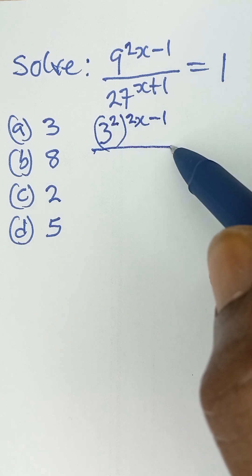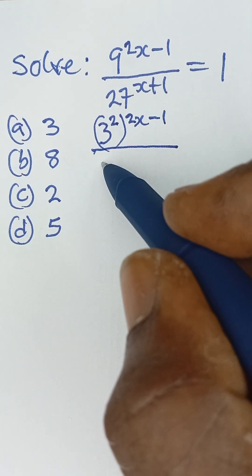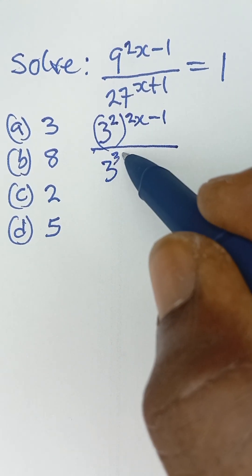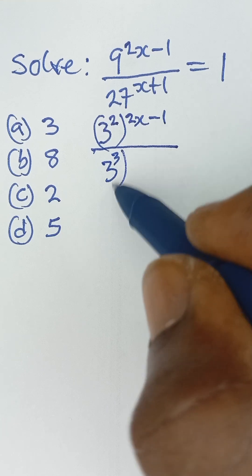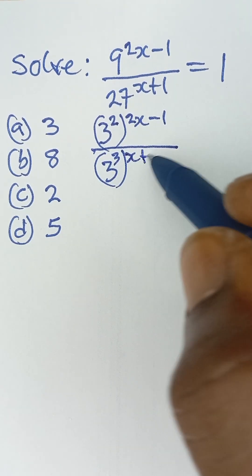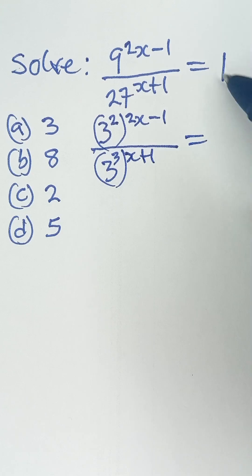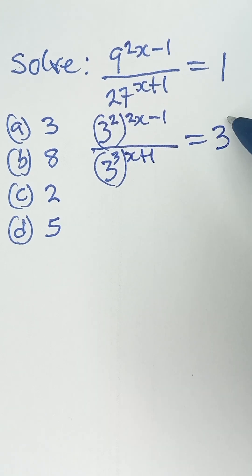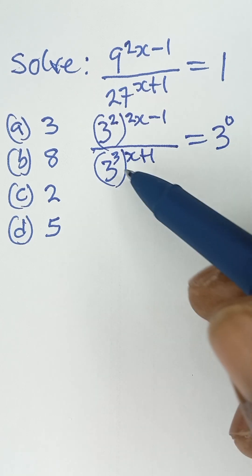Then all over 27 becomes 3 raised to the power 3, all raised to the power of x plus 1. And now 1 can be expressed as the base of 3 raised to the power 0, because 3 raised to the power 0 will give us 1. So we are trying to express it in the same base 3.